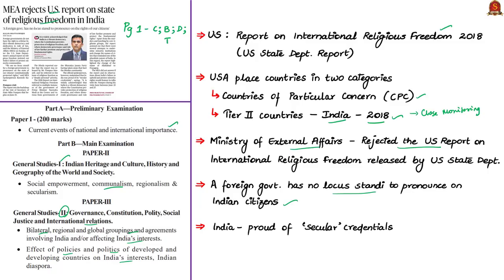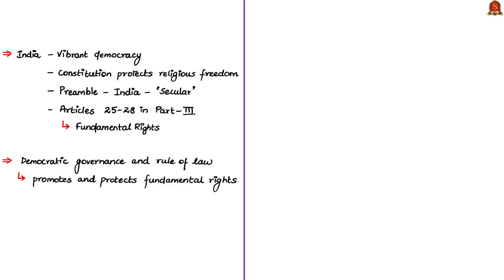India's Ministry of External Affairs spokesperson stated that India is proud of its secular credentials and is a vibrant democracy where the constitution provides protection of religious freedom. The preamble to the Indian constitution states India is secular, and articles 25 to 28 in Part 3 deal with the right to freedom of religion. Democratic governance and rule of law further promote and protect fundamental rights. Therefore the Ministry of External Affairs rejected the US report on international religious freedom as it applies to India.